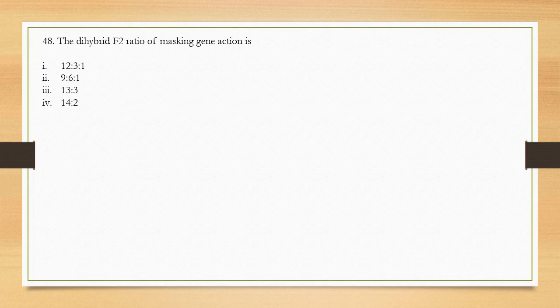Question number 48: The dihybrid F2 ratio of masking gene action is — options are 12:3:1, 9:6:1, 13:3, and 14:2. Masking gene action is another term for epistatic gene action — gene-to-gene interaction. The epistatic gene question is followed by question number 49.